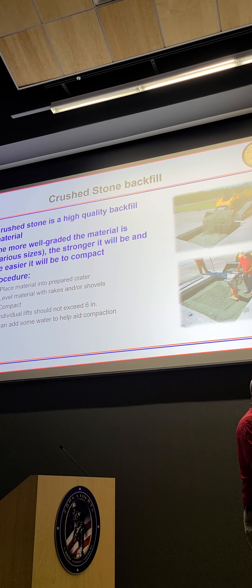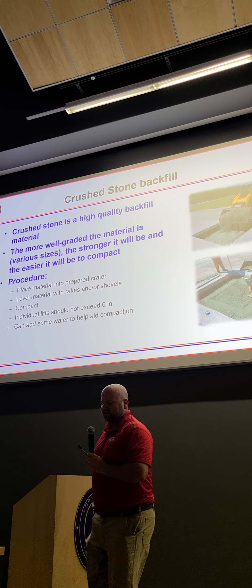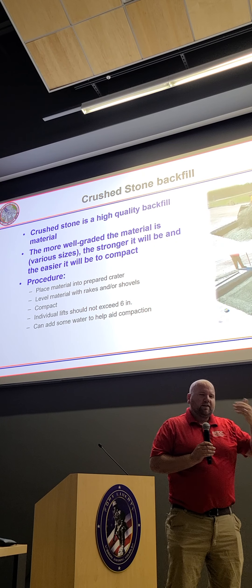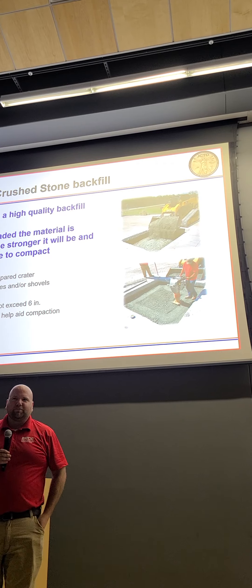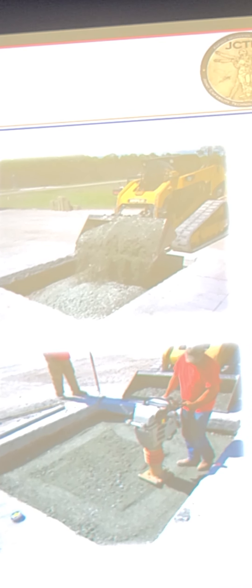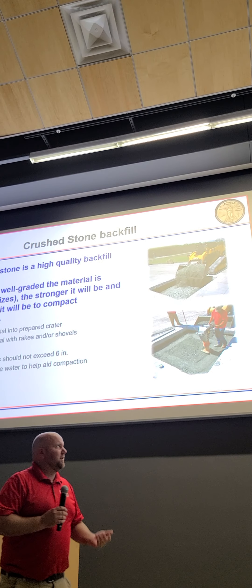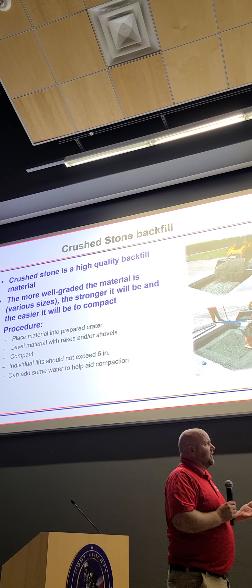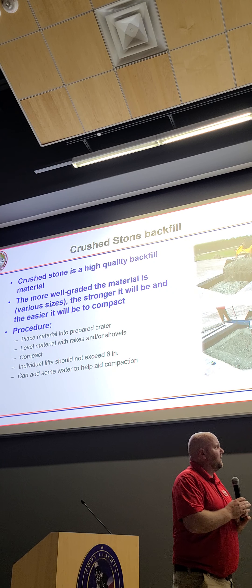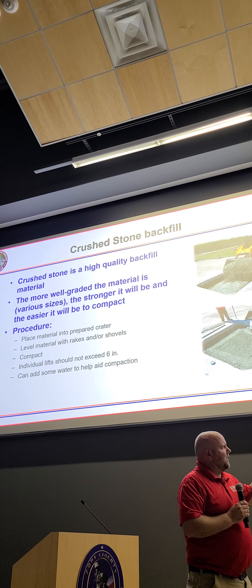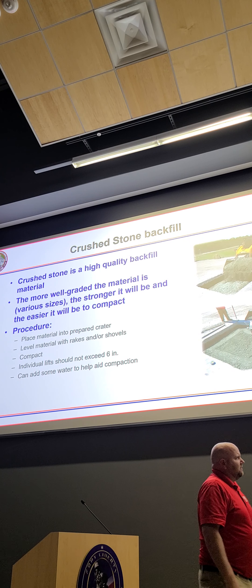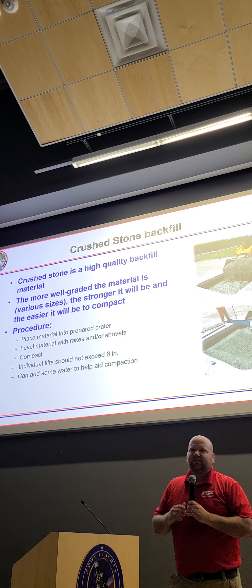Any questions on GSL slash sand grid? So the other one we wanted to talk about was just using a crushed stone backfill. Crushed stone is a good backfill — it's pretty much the highest quality you can put in other than something cementitious. The more well-graded the material is, with different sizes — some fines and some bigger pieces — the better it will compact and the higher quality it will be, which is going to make the repair last longer. The procedure is: place material into your prepared crater, level with rakes or shovels, and compact. You don't want to compact greater than a six-inch lift to make sure you get proper density. If the material is really dry, you can add a little bit of water to get it closer to optimal moisture content to enable it to compact better.